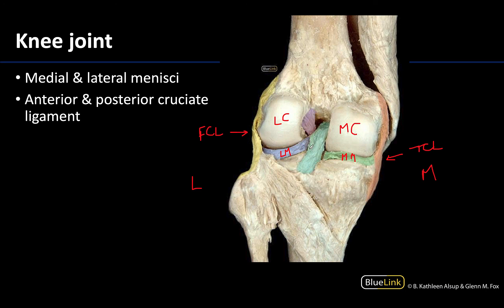Since we're looking at a posterior view, the clearest cruciate ligament will be the posterior cruciate ligament. You can see a bit of the anterior cruciate ligament here as well, and you can really nicely see how they kind of cross — thus the name in terms of their structure. So those are the structures we need to identify on the knee joint. Make sure you understand what you can see from an anterior view as well as a posterior view. Thank you for your time and attention, and as always, please feel free to reach out with any questions.